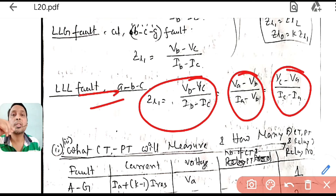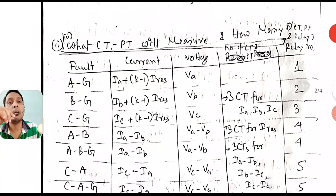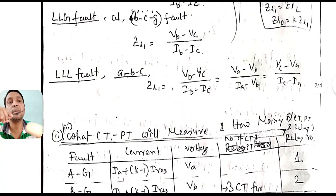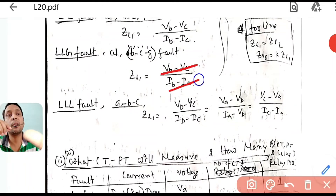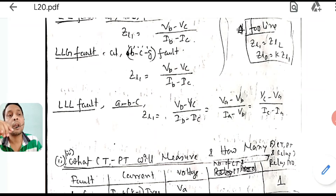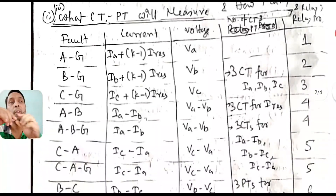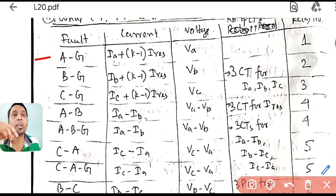Now we know how to calculate ZL1 for different fault cases, and ZL1 will be compared with the transmission line impedance ZL. From the expressions derived, we need various current combinations — for LLG BCG fault we need IB, IC as well as IB−IC. Let us now determine for all 11 faults how many CTs, PTs, and relays are needed. Starting with the LG fault — AG fault — what current and voltage do we need?